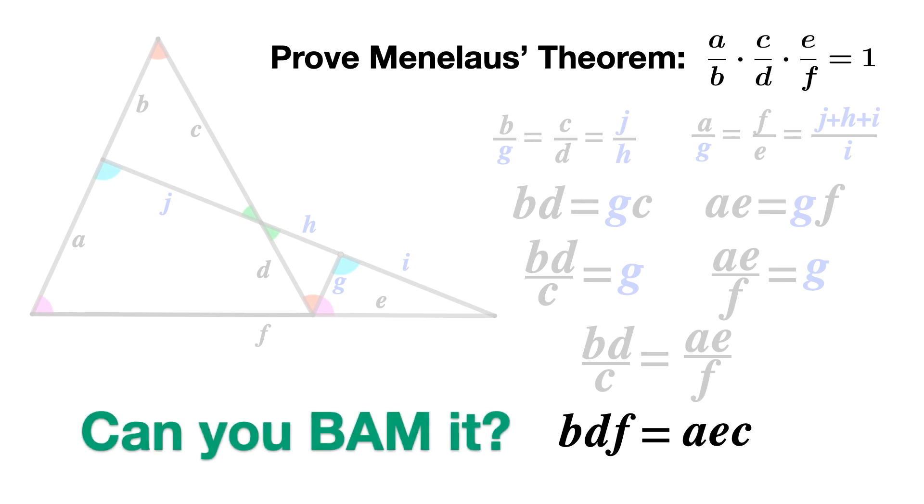And now I'm going to stop. Can you take BDF equals AEC and using algebra, finish the proof showing that A over B times C over D times E over F equals 1? Can you bam it?